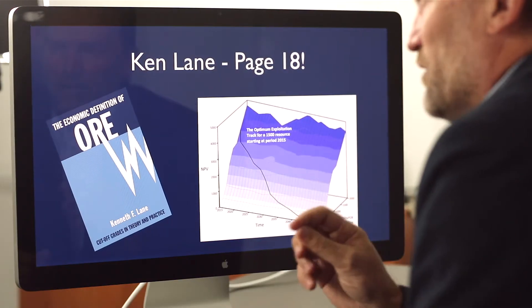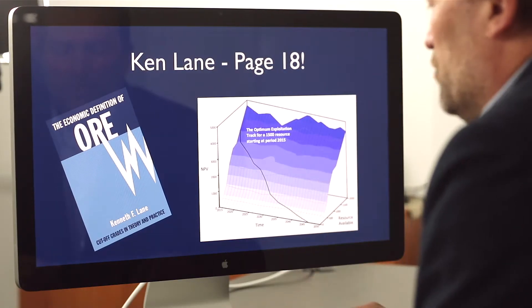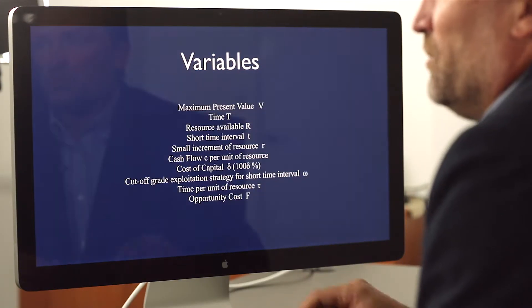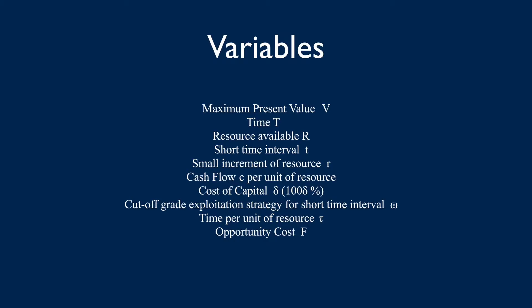Before we look at the algorithms, let's just confirm the variables that are being used in these formulas. All the variables are exactly the same as what's in Ken Lane's book, so there's no confusion there. This is the formula at the top of page 18.